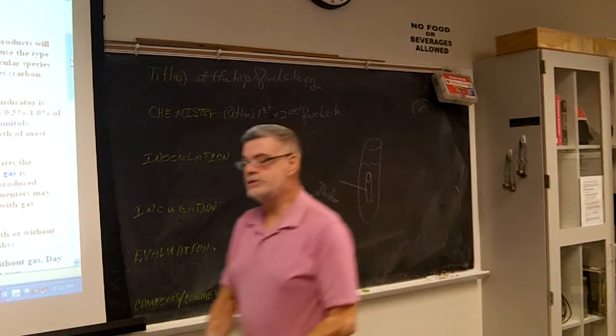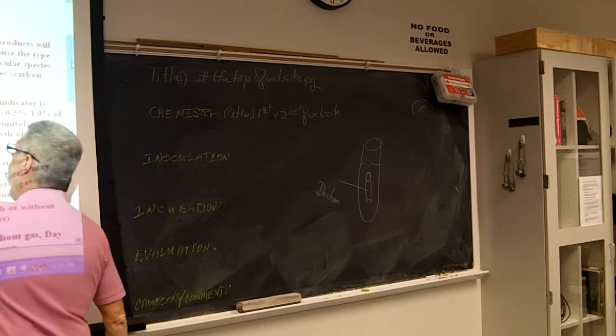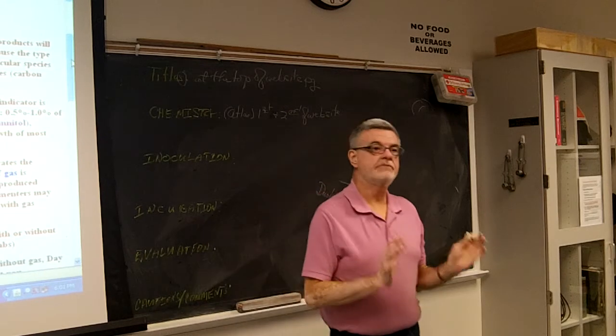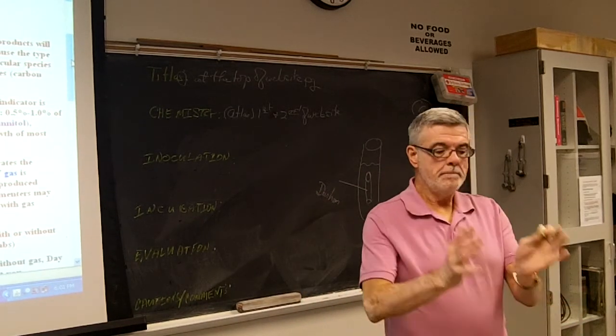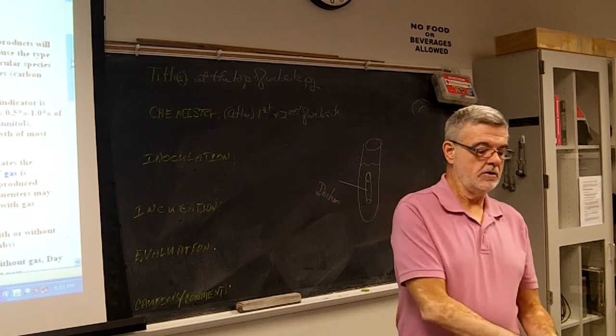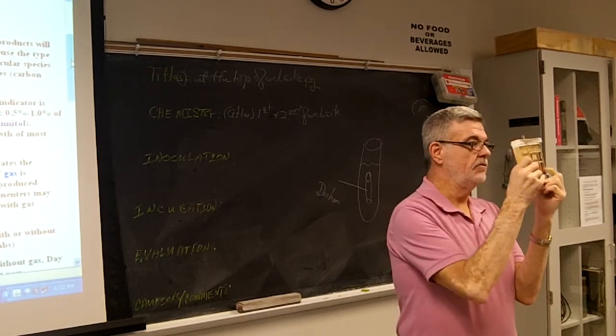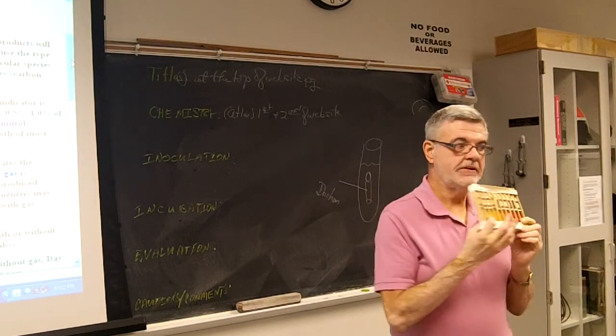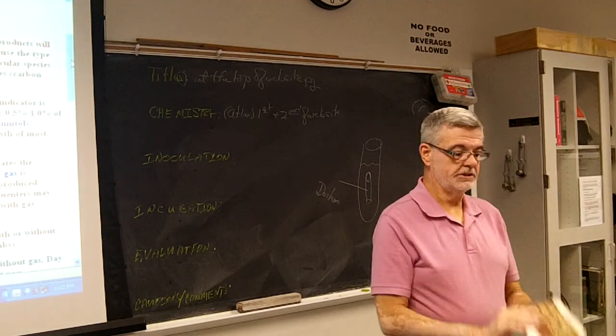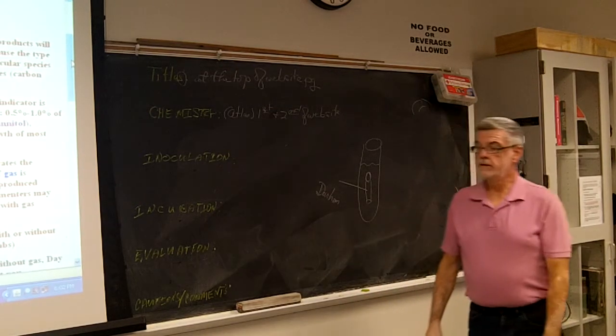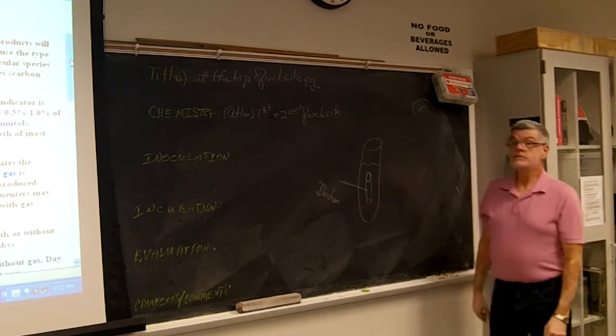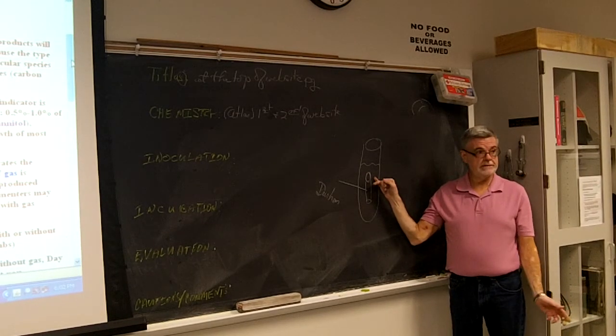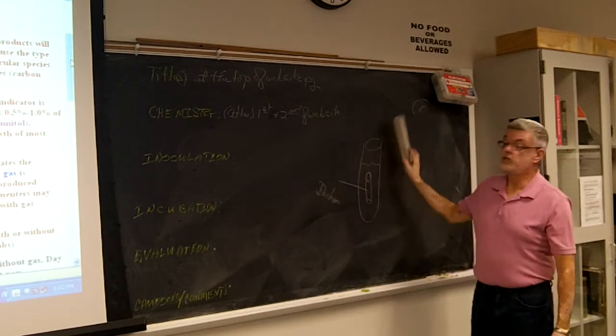This is phenyl red. And if they're positive, it'll look like that. This is phenyl red pH indicator. It just changes the color when the acid is produced. So, if it's positive, then you look to see if it's got a bubble. That's it. It's really easy. So, anyone not understand what's going on?